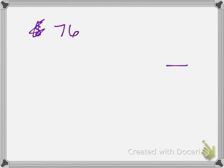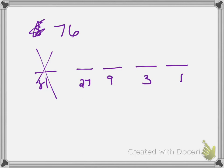Let's try one more. Let's say we have the number 76. I'm going to put my place values again: 1, 3, 9, 27, 81. Well, 81 is too big, so I'm not going to use that. I know I can fit one 27 in there — can I fit another? Sure. 27 times 2 is 54, so I have 2 of those. 76 minus 54 is 22.